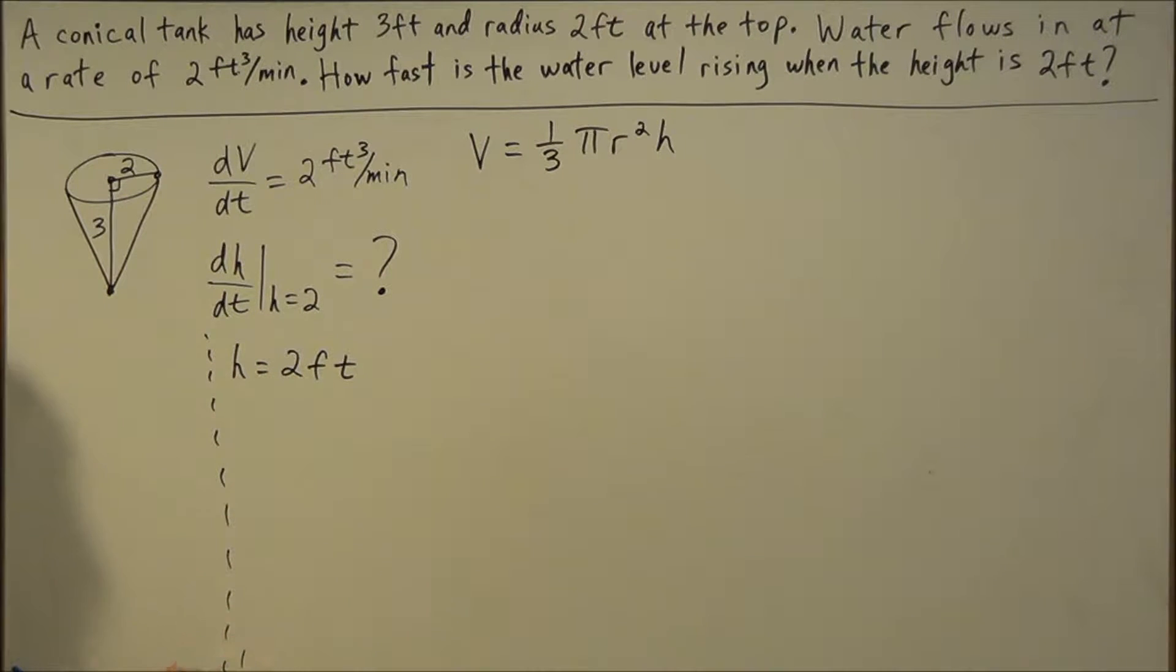We need to use a geometric concept that with a cone, wherever the water level is, we could always find a new radius and a new height as the water fills this cone. If we look at these two right triangles separately, the big right triangle represents the entire cone, 2 and 3. But wherever the water level is, the radius at that level and the height are going to stay in this ratio of 2 to 3. So whatever the radius is and the height is, dependent upon the water level rising, we know that r/h has to stay in the ratio of 2/3.